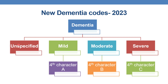There are different codes for different types of dementia, but there is a similarity regarding mild, moderate, and severe dementia — they are indicated by the fourth character. Mild dementia is indicated by fourth character A, moderate dementia is indicated by fourth character B, whereas severe dementia is indicated by fourth character C.